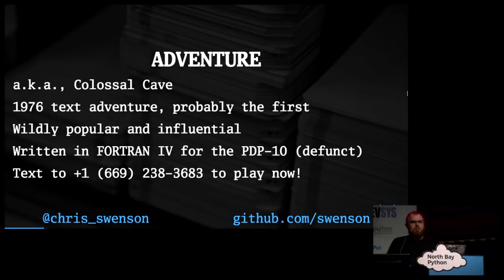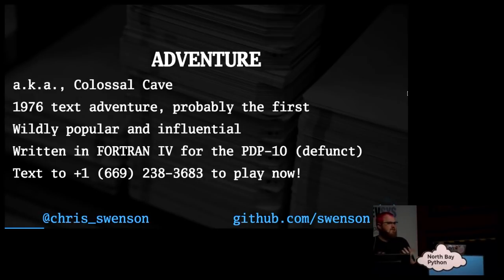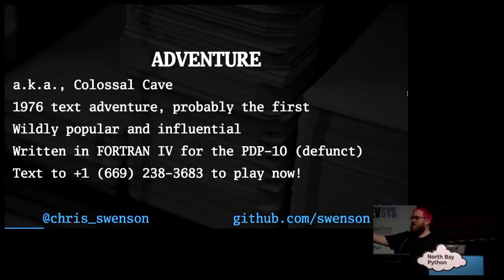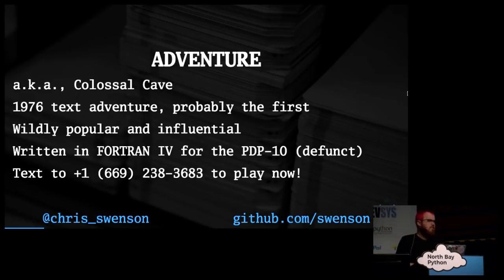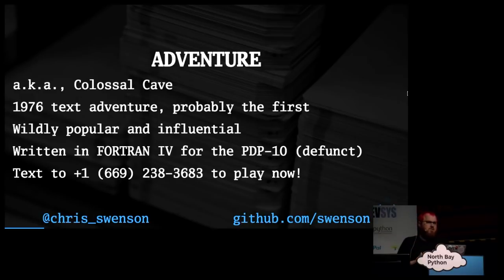I had a lot of fun writing a Python interpreter for the Fortran 4 code to get it to run on modern machines, then hook it up to text as the way to interact with it. You can text 1-669-238-3683 — I think that spells like Advent 3 or something. You can actually play this now, though you will probably melt the server if you all tried at once, because this program is real inefficient. There are so many layers of bad things going on.